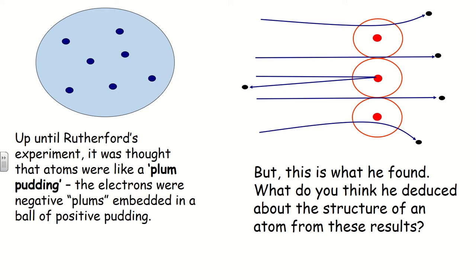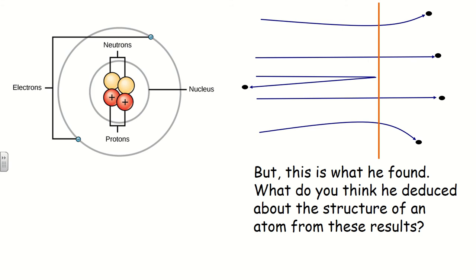Looking at the diagram: some alpha particles passed straight through, some were deflected at angles, and one in the beam bounced directly back. Rutherford concluded that there must be something quite large inside the atom — a nucleus — that alpha particles occasionally collided with and bounced off. The other particles passed through what was mostly empty space. He concluded that an atom must have a large nucleus in the middle surrounded by a lot of space, with electrons orbiting on the outside.